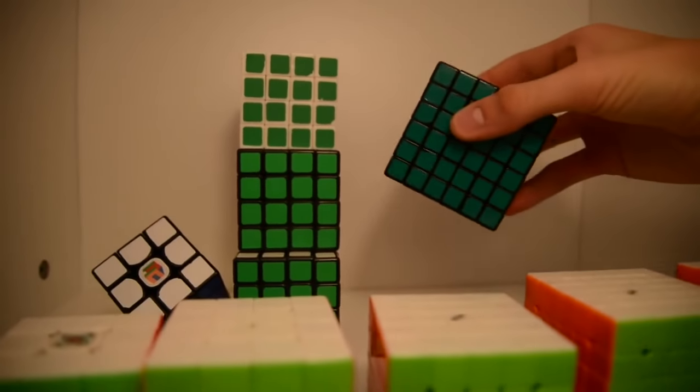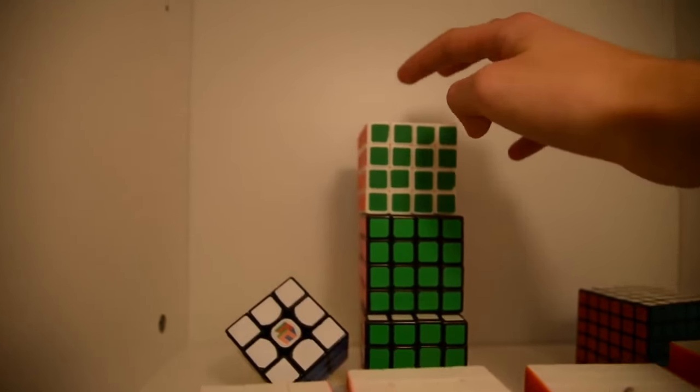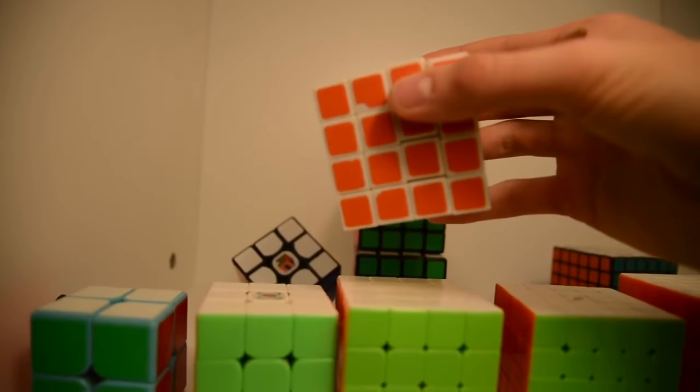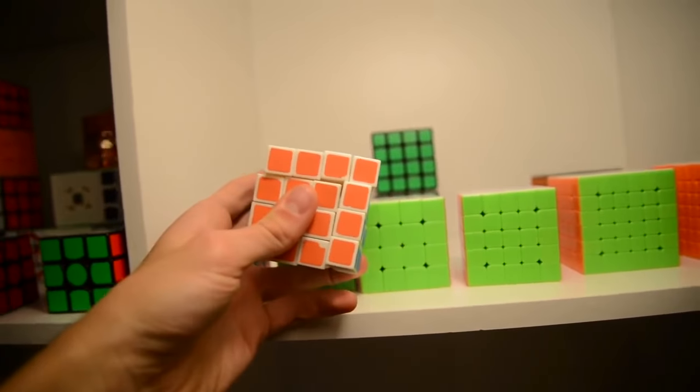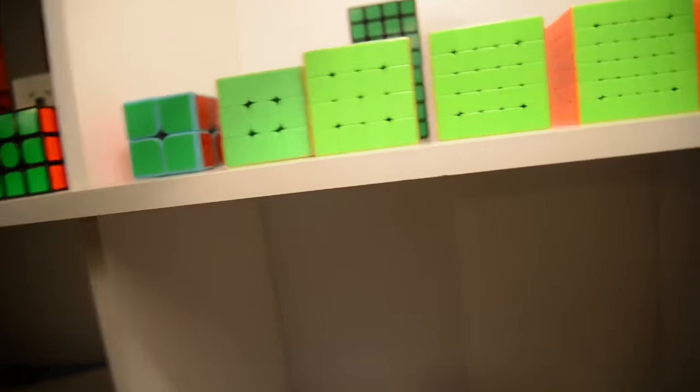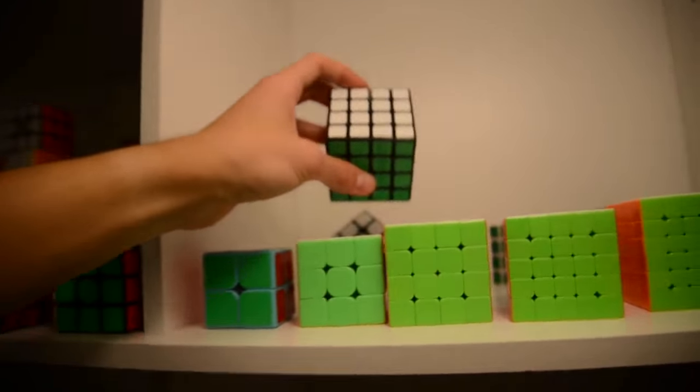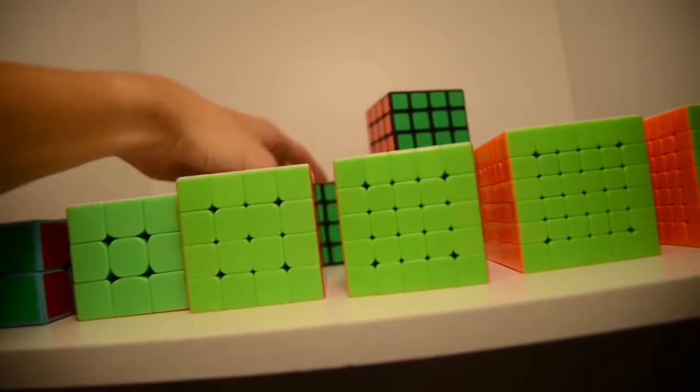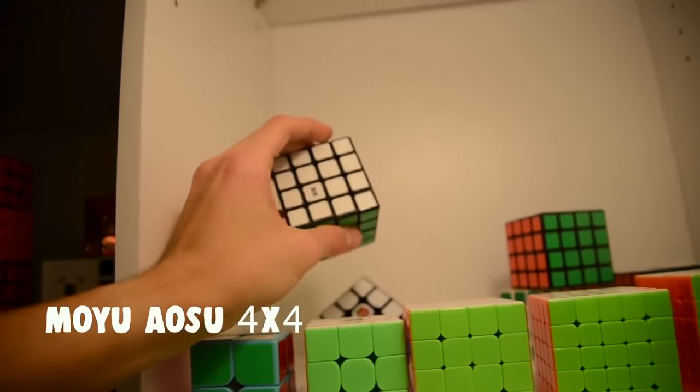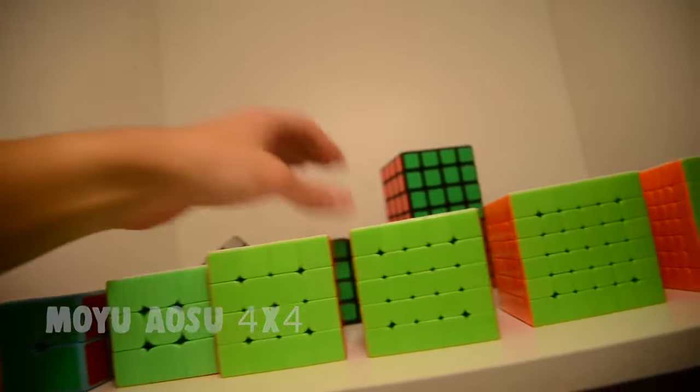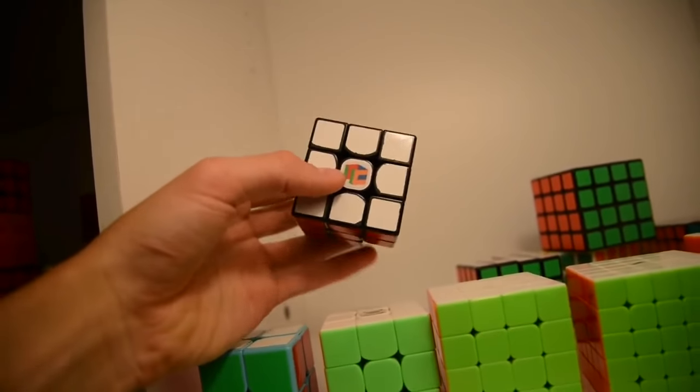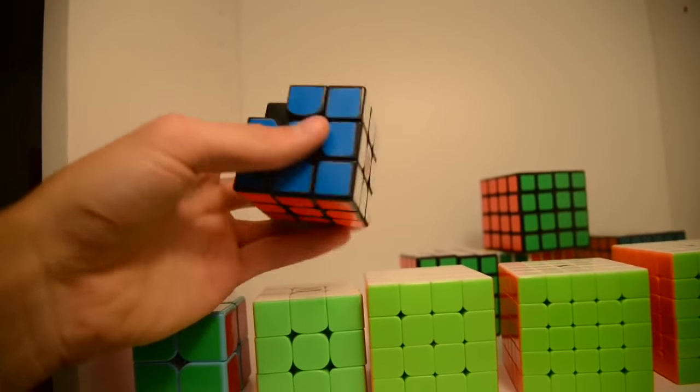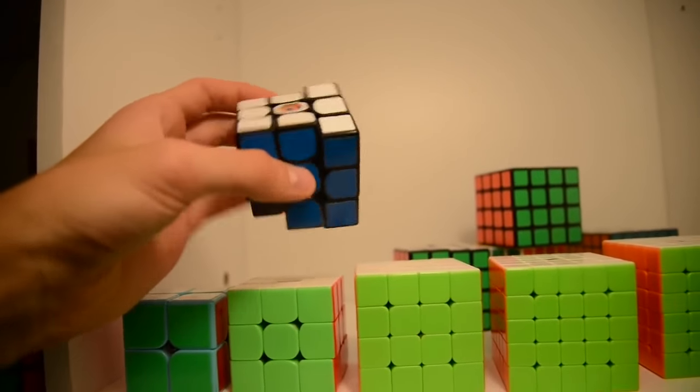Here we have this Shengshou 6x6. A bad cube. Here we have one of the greatest 4x4s on the market. Basically, it cuts like negative 2 degrees. So that's really good. Here we have the Aosu GTS version 1 I think. And here we have something else. This is my first Valk. This is a really, really cool cube. Although it broke. But it's a really nice cube.